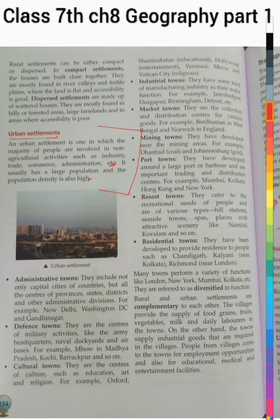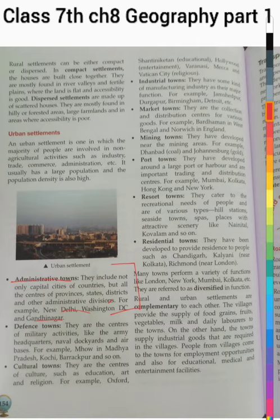Urban settlements are categorized into many types. First are Administrative Towns, which include capital cities of countries as well as centers of provinces, states, districts, and other administrative divisions. For example, New Delhi, Washington DC, and Gandhinagar. Next are Defense Towns, which are centers of military activities including army headquarters, naval dockyards, and air force bases. Examples include places in Madhya Pradesh, Kochi, and Barrackpur.